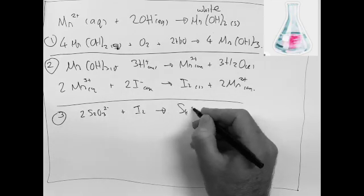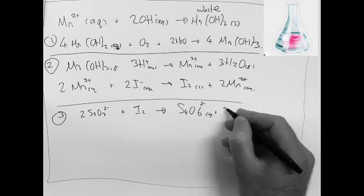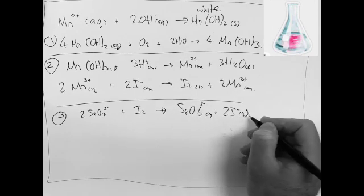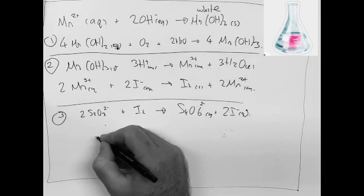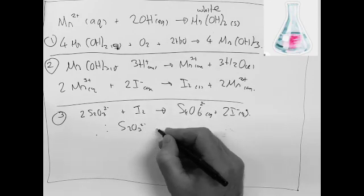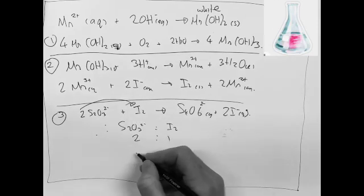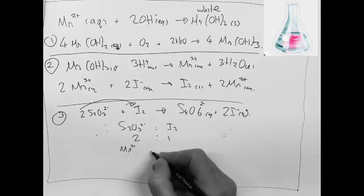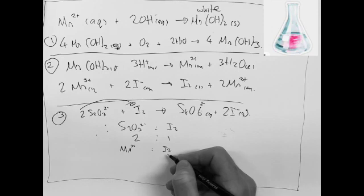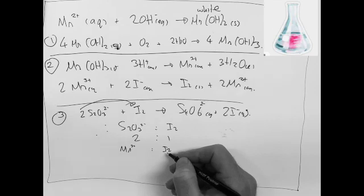We finally titrated the iodine from the second part of step 2 with thiosulfate, making our S₄O₆²⁻ and two iodides. So let's look at the ratios. Thiosulfate S₂O₃²⁻ to iodine is 2 to 1. Mn³⁺ to iodine - let's have a look, it's in the second part of the second step - so the ratio is also 2 to 1.